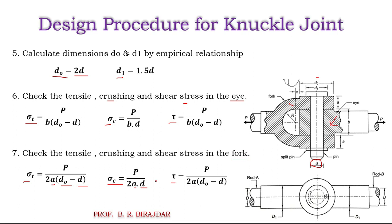If all stresses are within the allowable limits, the design is safe and we can draw the final drawing. This is the complete design procedure for the knuckle joint, by using which we can solve different problems. I hope you have understood. Thank you, see you in the next lecture.